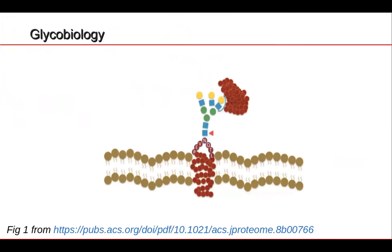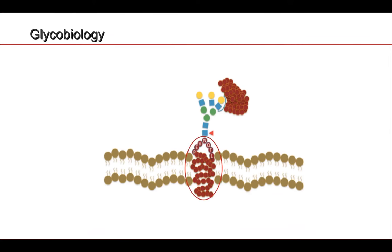Today I'm going to talk about glycan protein interaction motifs. A few words about glycobiology and glycosylation: a glycoprotein is a protein that has linked to it a carbohydrate, also known as a glycan or a sugar residue. This sugar residue usually has some kind of binding motif that is recognized by a glycan binding protein.